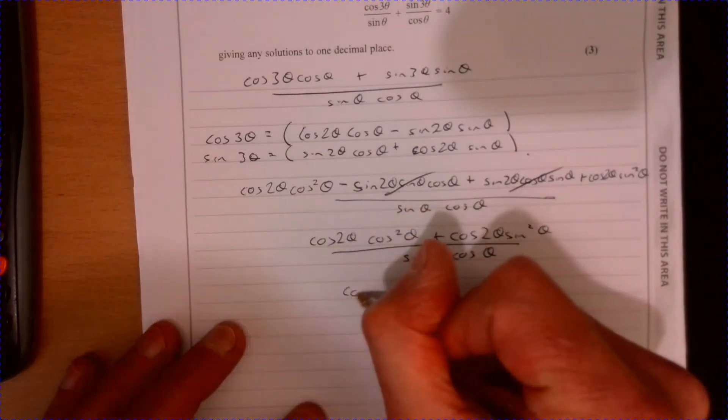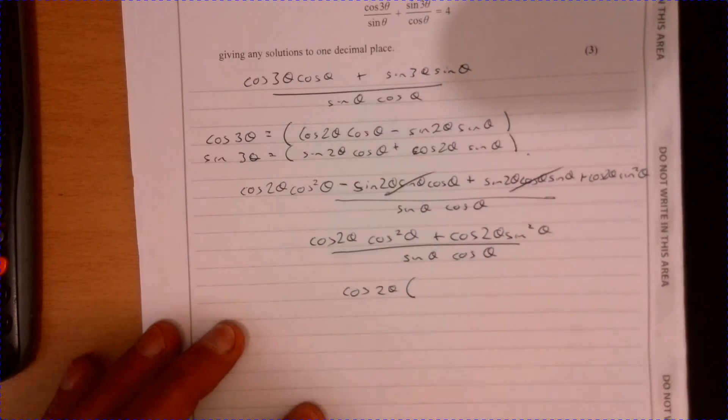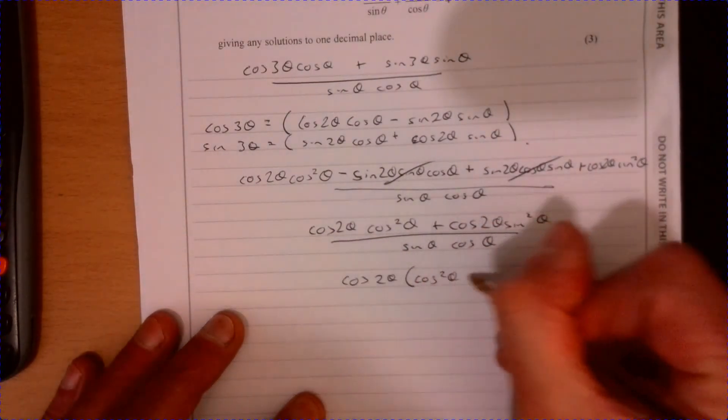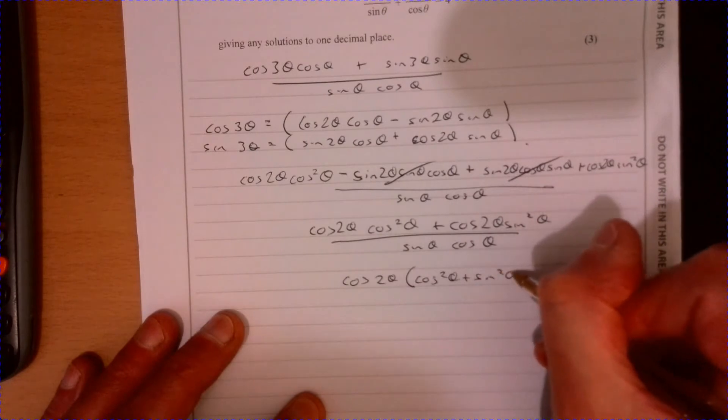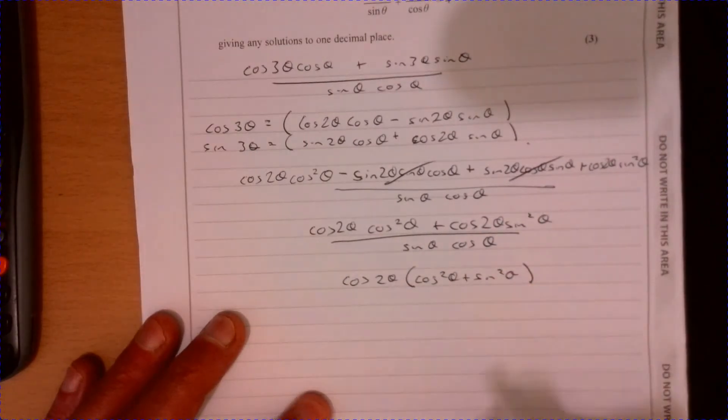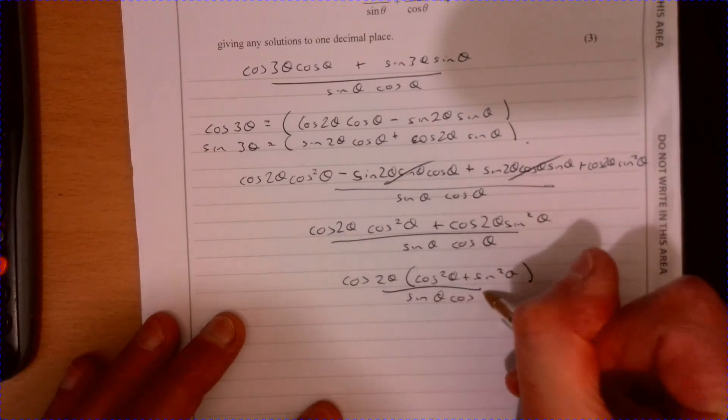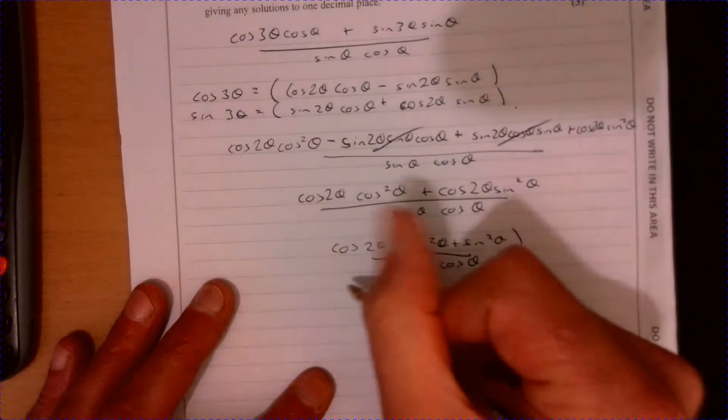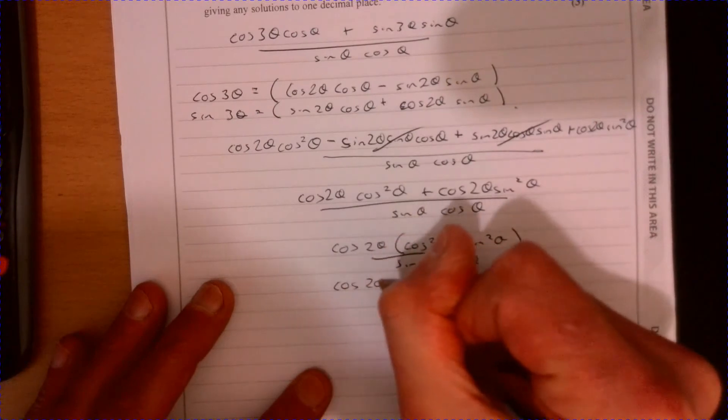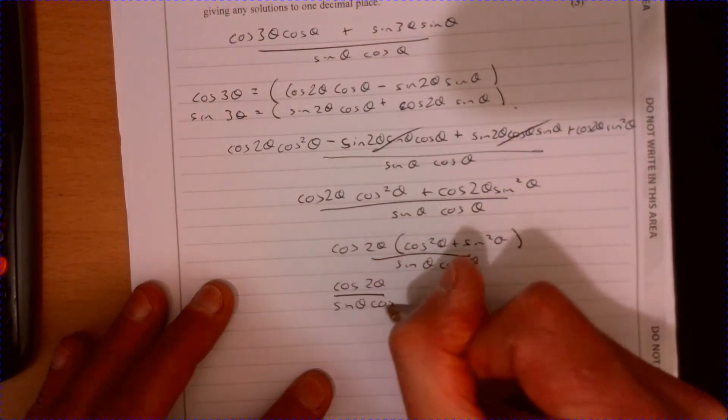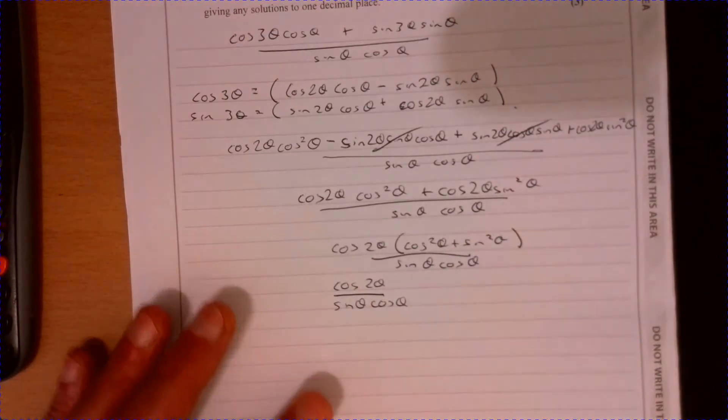If I just take out cos 2θ as a factor, I've got cos squared θ plus sine squared θ, that's one. Look at this, this is dropping out really nicely. Still a little way to go. That's just going to be one there, so we've got cos 2θ over sine θ cos θ.